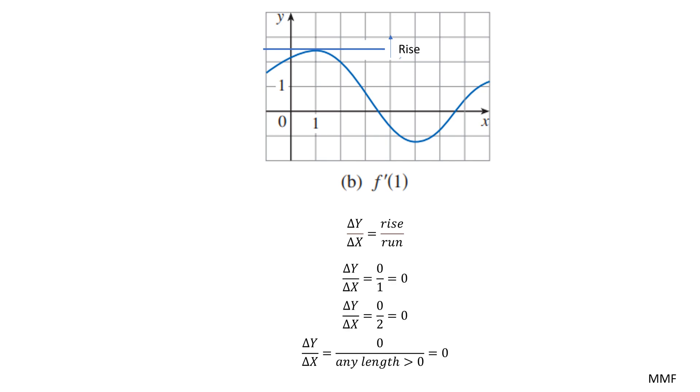So it just becomes 0 over 1, which is simply 0. If we chose a distance twice as long, it's 0 divided by 2, still 0. Basically, the point we're trying to get to is that 0 divided by any length is still going to be 0.